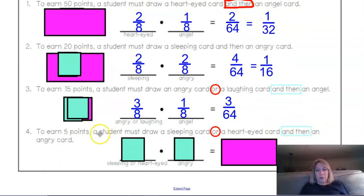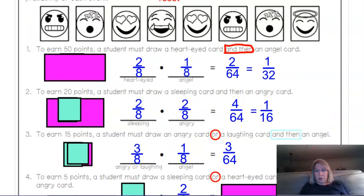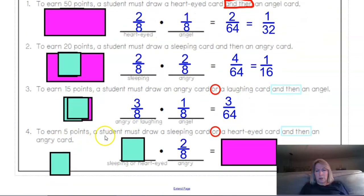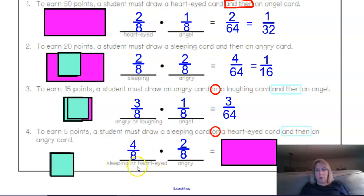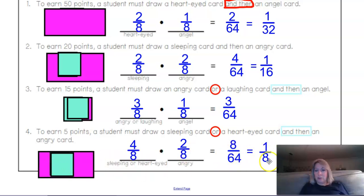To earn 5 points, a student must draw a sleeping card or heart-eyed card, and then an angry card. The angry card: that was two out of eight. The sleeping cards: there were two out of eight. The heart-eyed cards: also two out of eight. So sleeping or heart-eyed was four out of eight — half the cards. And two of the eight cards were angry. So we take 4/8 times 2/8, or 1/2 times 1/4, and it simplifies down to 1/8.